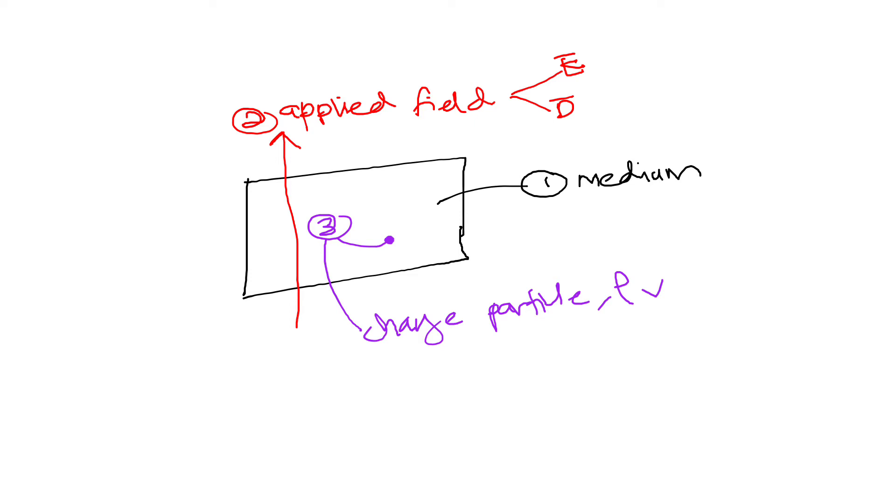For example, if this charge is moving due to the applied field, we will say the medium is a conductor. But if this charge is steady even though we give the field level, then we can say that this medium is dielectric. So from here you need to remember that these three things are important to identify the medium in this electrostatic area.